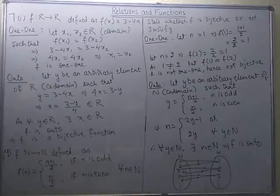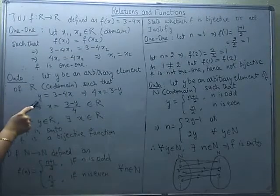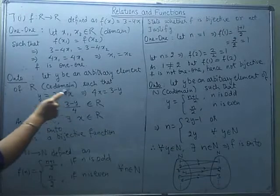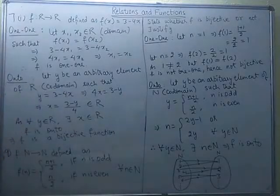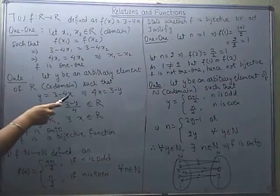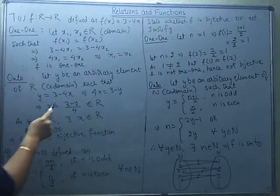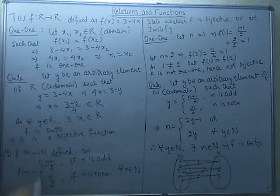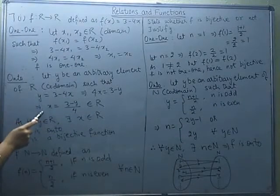Now let us check whether it is onto or not. We take an arbitrary element y in the set R, which is the co-domain, such that y = 3 minus 4x. By assuming this, we are implying that the element x has image y — so y is any arbitrary element in the co-domain which is the image of some element in the domain. Solving for x gives x = (3 minus y) / 4.